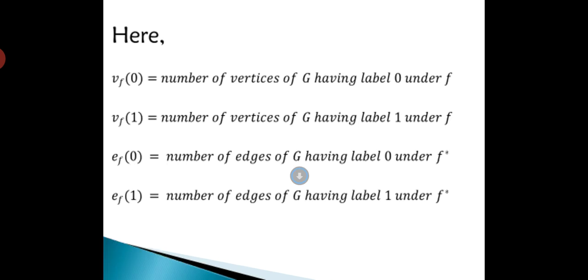The notations are v_f(0) = number of vertices of G having label 0 under f, v_f(1) = number of vertices of G having label 1 under f.